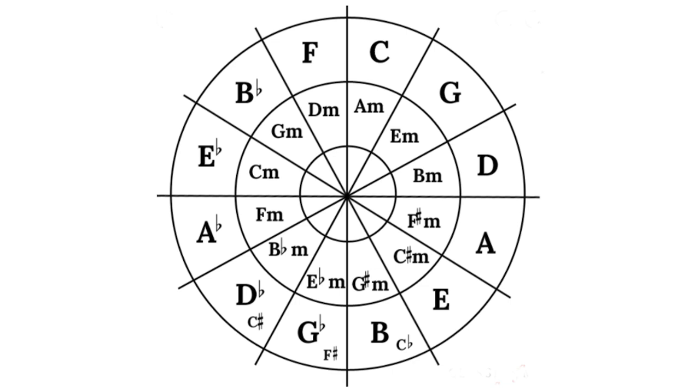It's useful knowing what key a piece of music is in because then you know what common chords you're likely to see. A major key and its relative minor will share the same common chords. Another great thing about the circle of fifths diagram is that all the common chords of one key are in one quarter segment of the circle. So if we look at C,